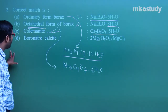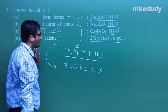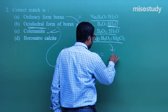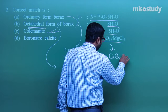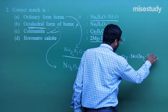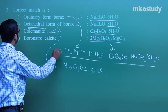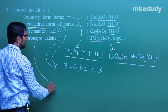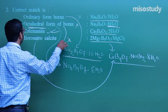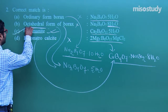Now check boronatrocalcite. The formula of boronatrocalcite is CaB₄O₇·NaBO₂·8H₂O. So the ordinary form of borax, octahedral form of borax, and boronatrocalcite each have their respective formulas. Options A, B, D are wrong. C is the correct match — C has the same formula. So for this question, C is the correct answer.